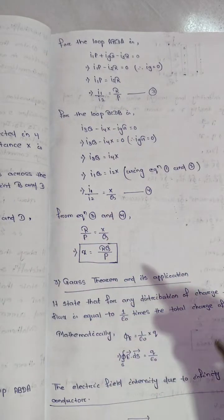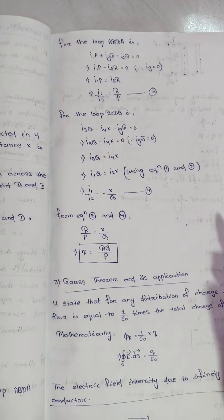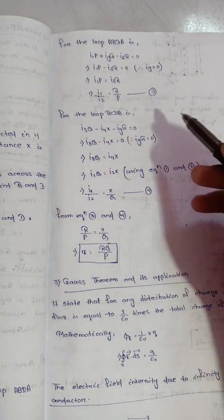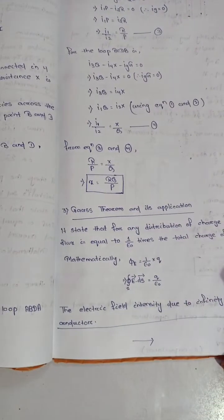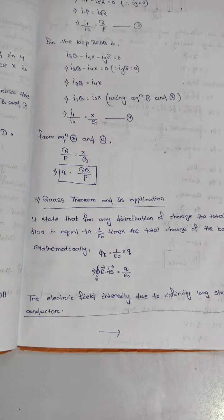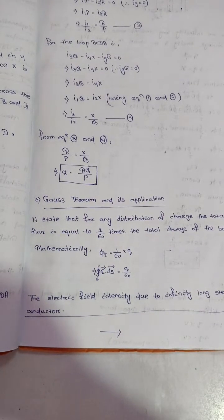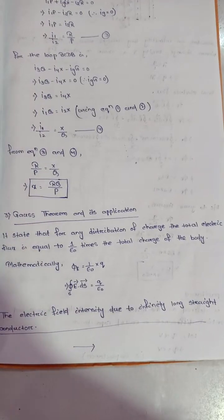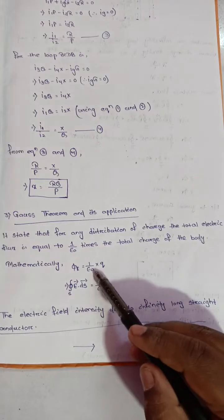Important theory and points are all written. The question is: state the Gauss theorem and its application. Gauss theorem states that for any distribution of charges, the total electric flux linked with a closed surface is equal to 1 by ε₀ times the total charge within the surface. Mathematically: φ = q / ε₀.